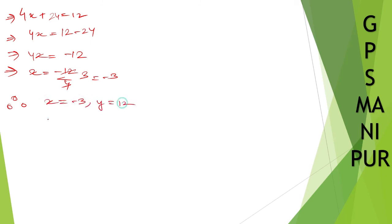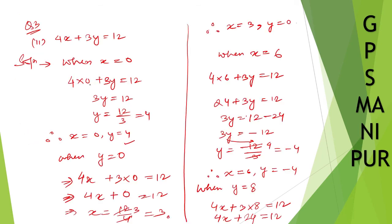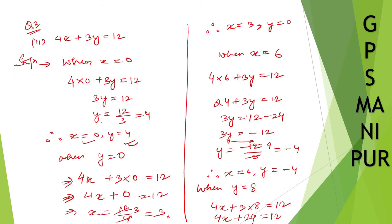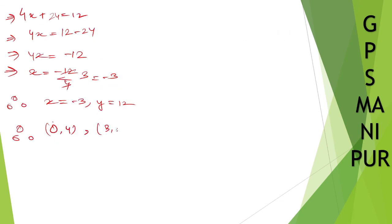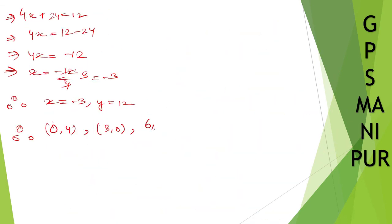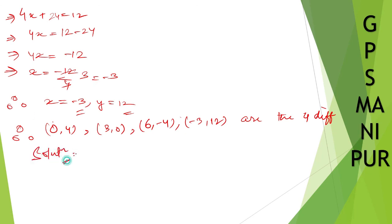So the 4 different solutions are: first, (0, 4); second, (3, 0); third, (6, -4); and the last one is (-3, 8). These are the 4 different solutions. Okay, that's all. Thank you so much. We will meet in the next video.